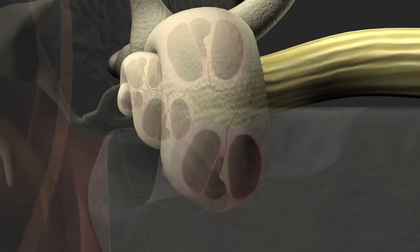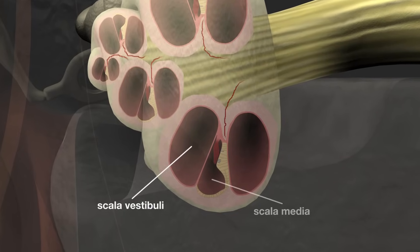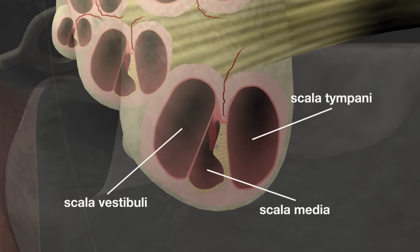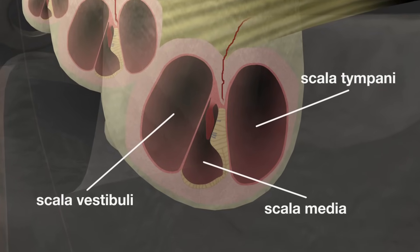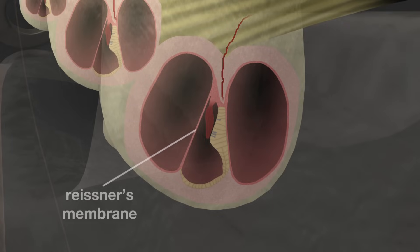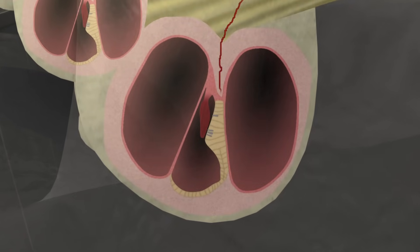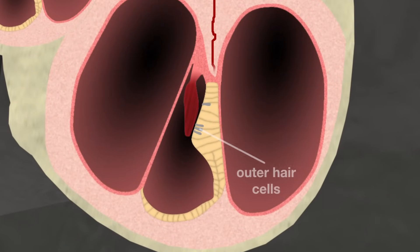The cochlea is split into three distinct sections known as the scala vestibuli, scala media, and scala tympani. The scala vestibuli and scala tympani contain perilymph fluid; the scala media contains endolymph fluid. The Reissner's membrane separates the scala vestibuli from the scala media, and the basilar membrane separates the scala media from the scala tympani.